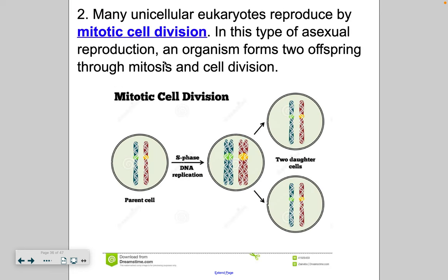The second type of asexual reproduction is mitotic cell division, and this happens in unicellular eukaryotes — one-celled organisms, but this time with a eukaryote. They call it mitotic cell division because the nucleus needs to divide, and then the organism divides. The parent cell replicates its DNA, goes through interphase, and then goes through a process of mitosis and then cytokinesis, and ends up with two identical daughter cells. Because unicellular eukaryotes have a nucleus, they have to go through mitosis.